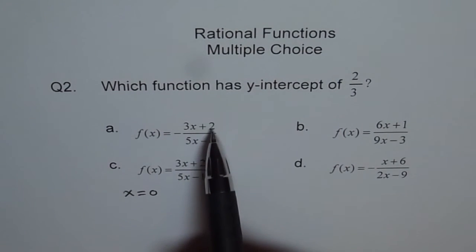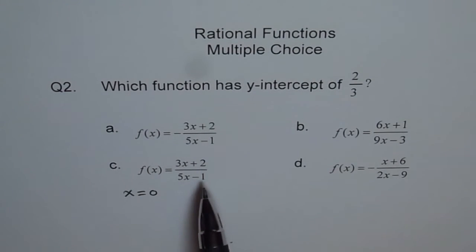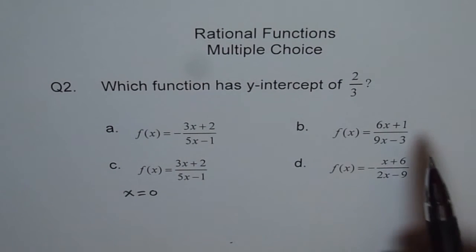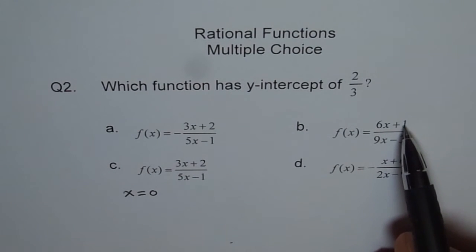So I am looking for the ratio of these 2, right? Constants. So here the ratio is minus 2, which is not our requirement. Here the ratio is minus 1 over 3, not our requirement.